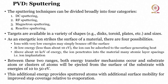As an energetic ion strikes the surface of a material, there are four possibilities. Ions with very low energy may simply bounce off. At low energy (less than ~10 eV), the ion can be absorbed, generating heat. Above 10 keV, the ion penetrates many atomic layer spacings — that is ion implantation. Between these two ranges, clusters of atoms are ejected with energies of 10–50 eV, which is sputtering. This additional energy provides sputter atoms with surface mobility, improving step coverage compared to EBME and thermal evaporation.